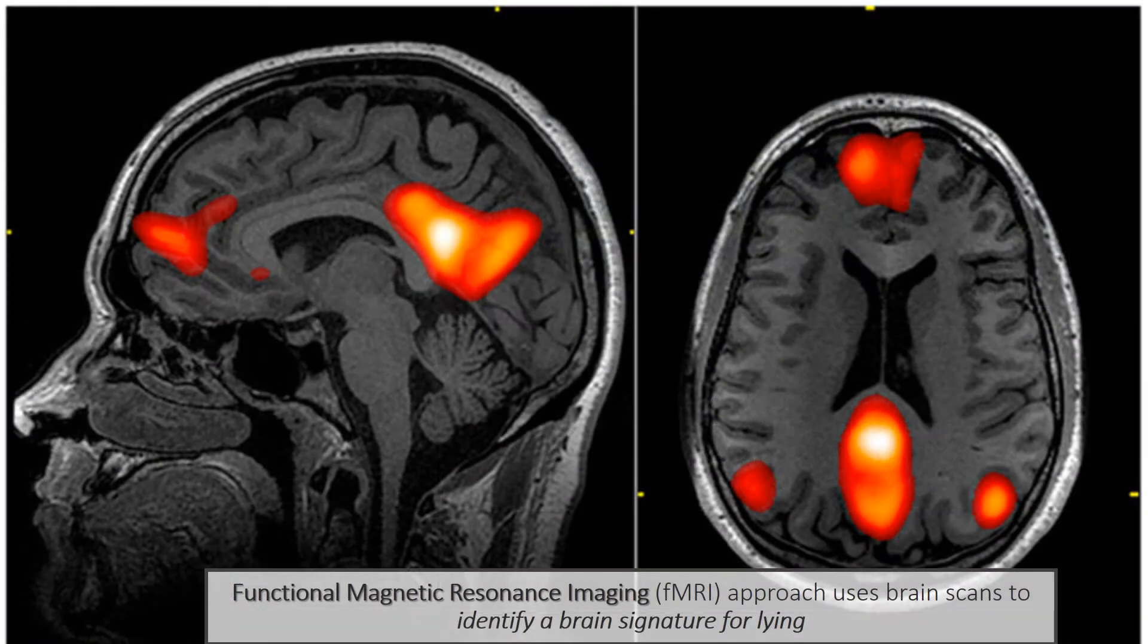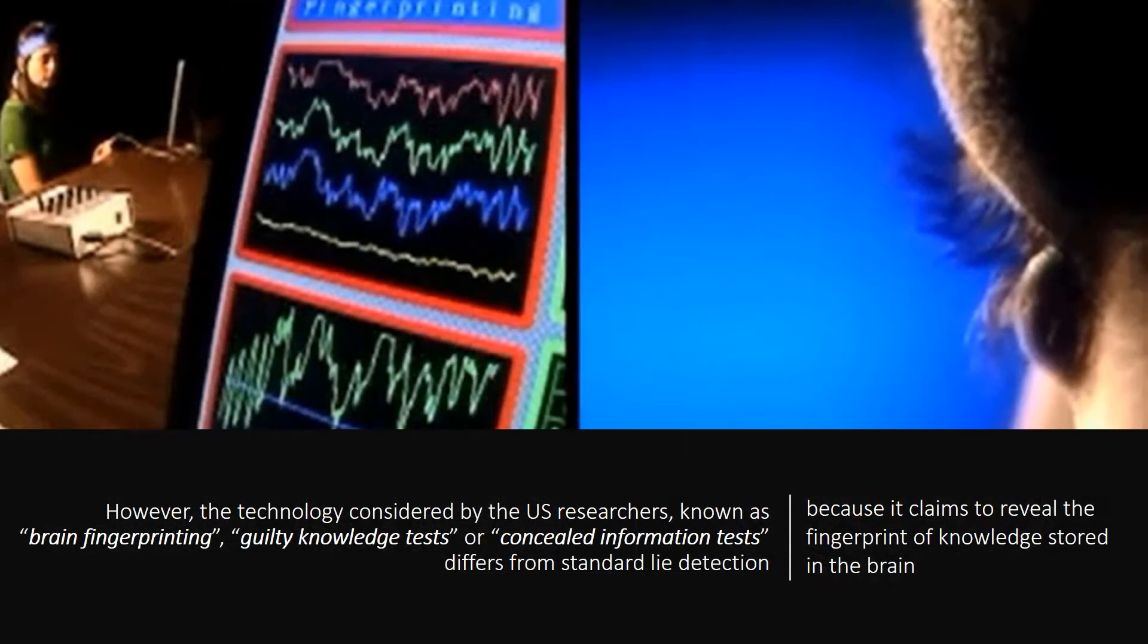But a functional magnetic resonance imaging approach uses brain scans to identify a brain signature for lying. However, the technology considered by the U.S. researchers, known as brain fingerprinting, guilty knowledge tests or concealed information tests, differs from standard lie detection, because it claims to reveal the fingerprint of knowledge stored in the brain.